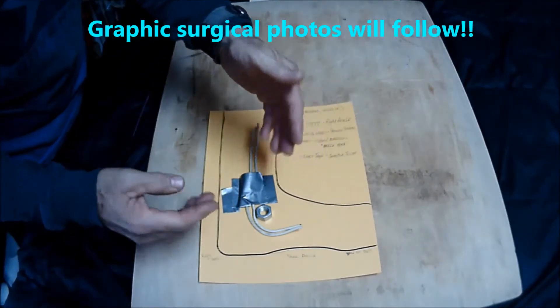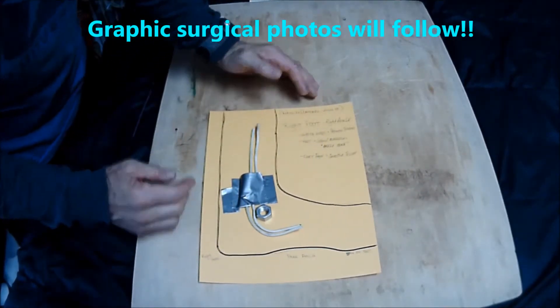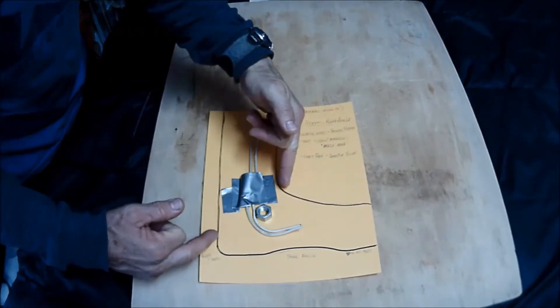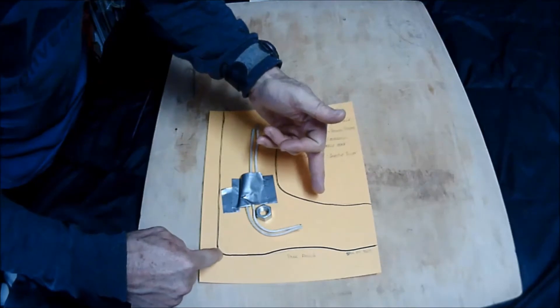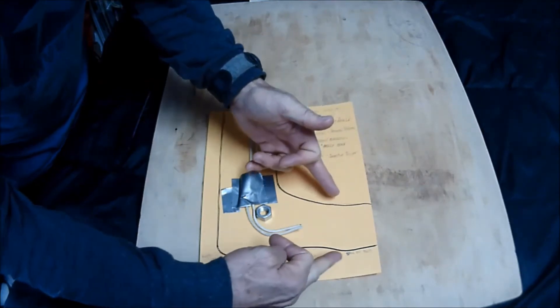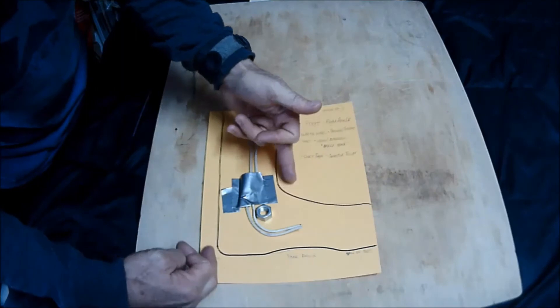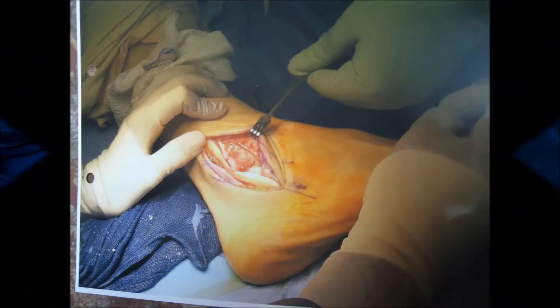This right here represents my right leg into my right foot. This would be the heel, the arch, and then down towards my toes—so the right leg, right ankle, right foot.